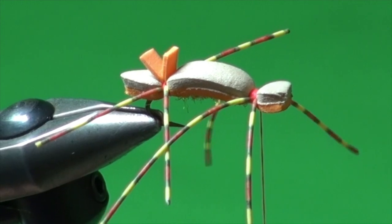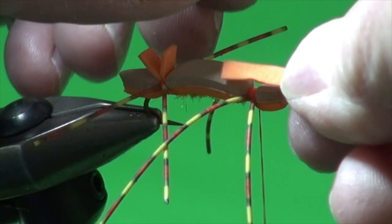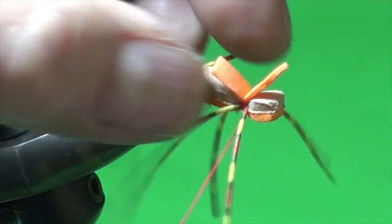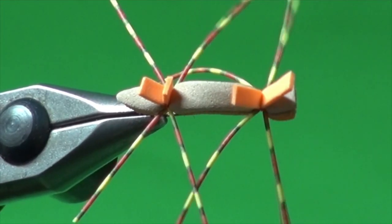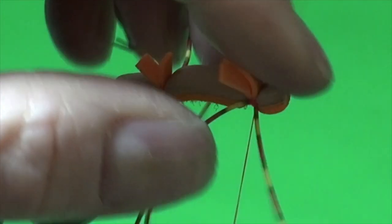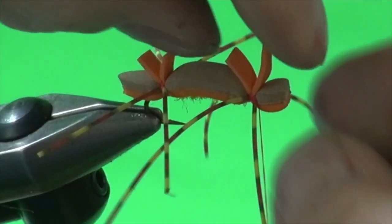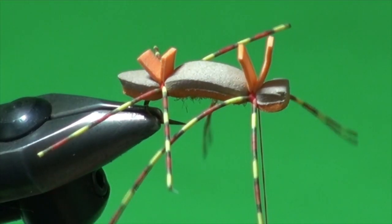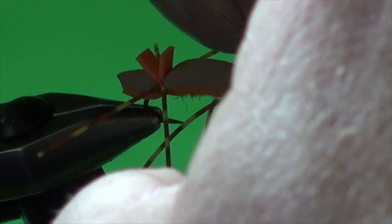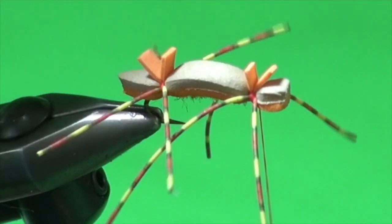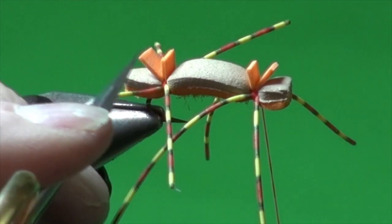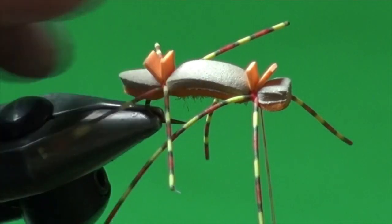And then we can take another section of the one mil foam. Over top. Make sure that's centered. Trim so they stick up so you can see those. Like so.